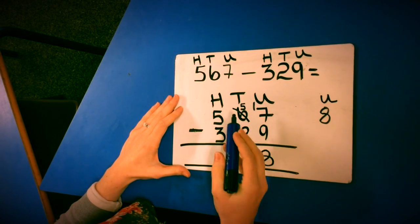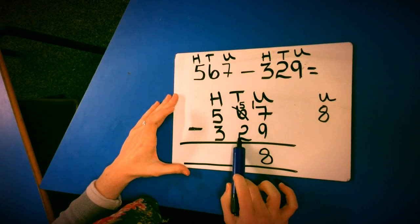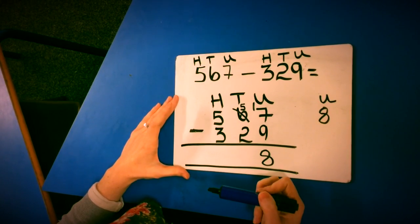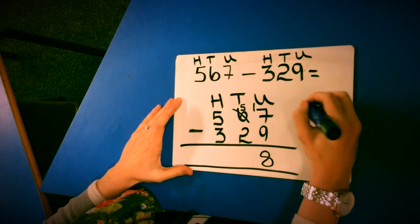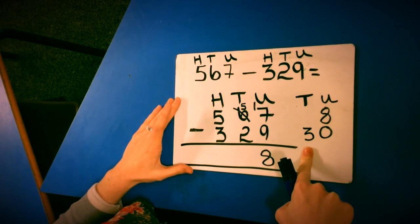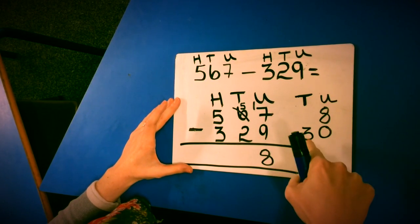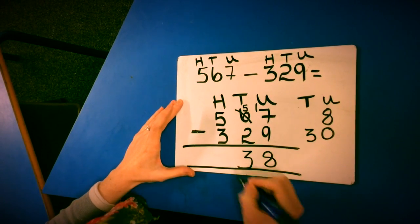I can then move on to my tens column. I've got 50 take away 20. Well 50 take away 20 is 30. Again, just to make sure that they understand the value. Well how many tens have I got left? I've got 3 lots of 10 or 30. And I put that underneath the tens.